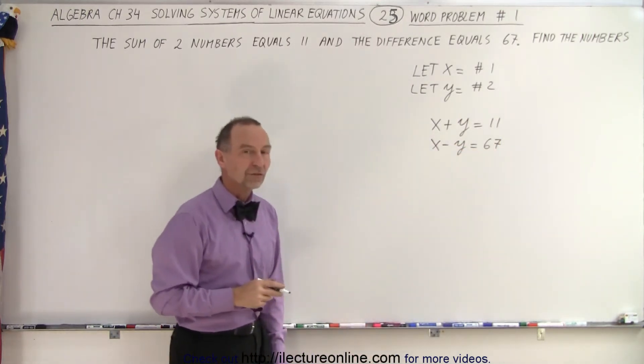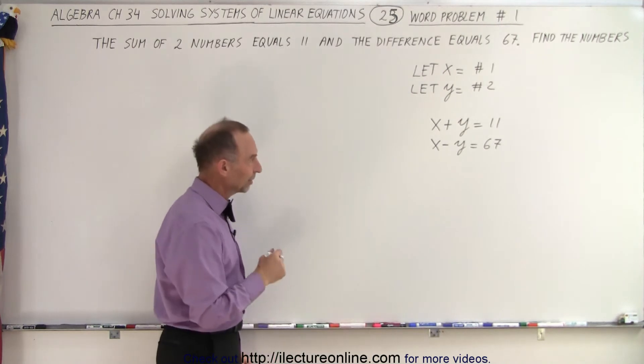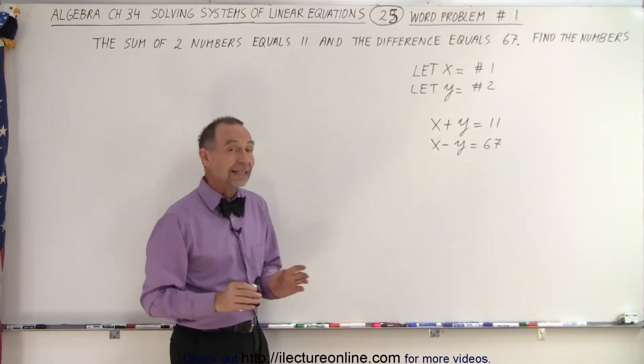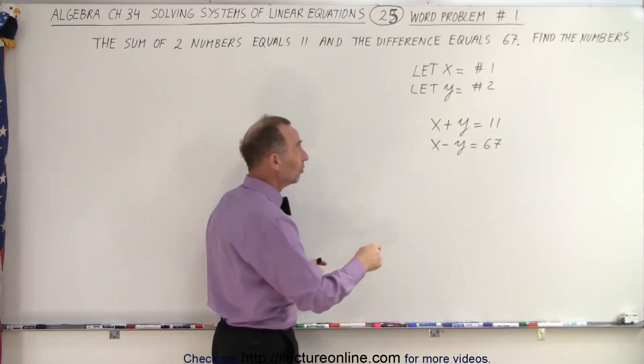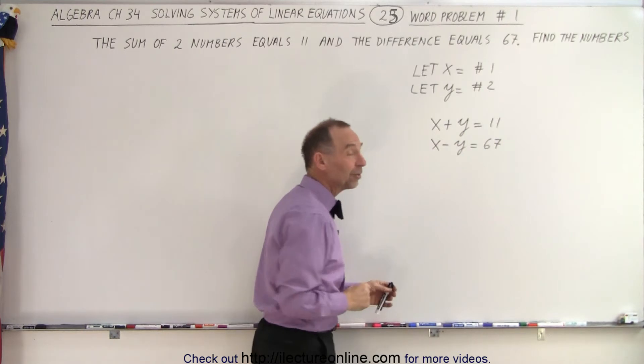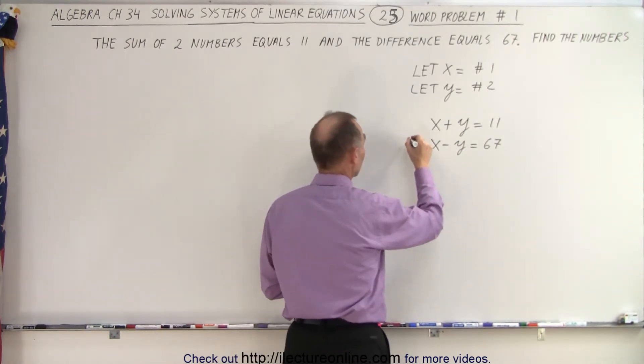Notice we have two equations that must be solved simultaneously. In this case, the elimination method is the easiest because the variables already have the same numerical coefficient and they're opposite in sign, which means that if we add the two equations, we'll eliminate one of the variables.